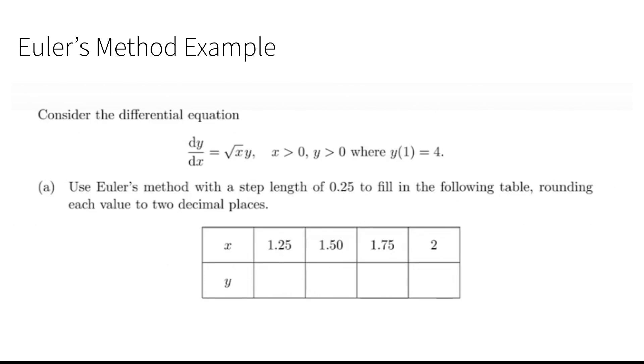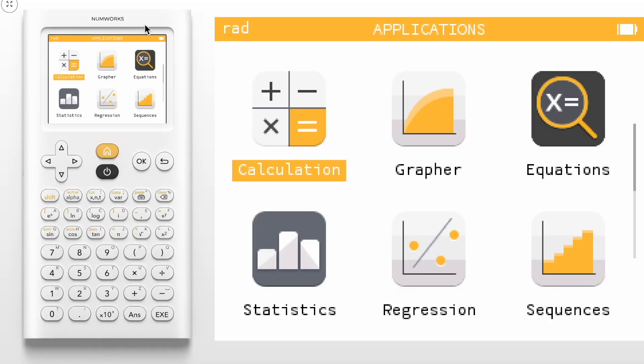To begin, we're going to open the NumWorks calculator. In the NumWorks calculator, we want to add a sequence of values, so we're going to go into our sequence application and press OK.